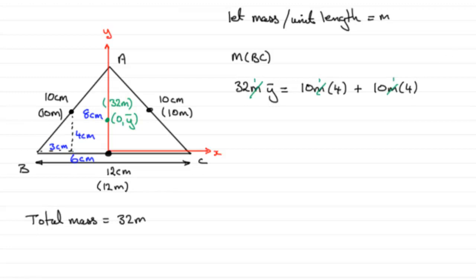And so that gives us 32 y-bar equals 40 plus another 40, which is 80. And so therefore y-bar equals 80 divided by 32. If you work that out, it goes in exactly two and a half times, so therefore y-bar equals 2.5 centimeters. So that is our distance then from BC, two and a half centimeters.